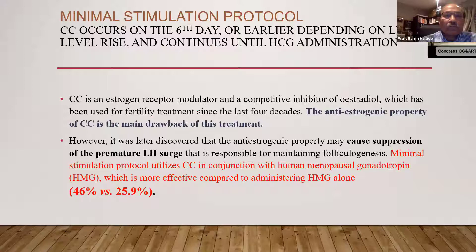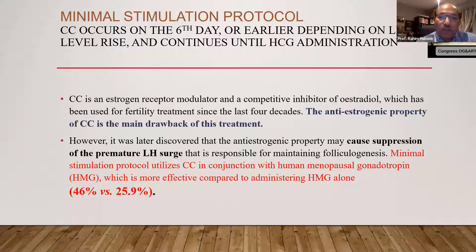How can we actually conduct the minimal stimulation protocol? We start with letrozole and continue the treatment with gonadotrophins after day five until the day of HCG or search. Clomiphene in conjunction with human menopausal gonadotrophin (HMG) is more effective compared to HMG alone — pregnancy rate is about 46% compared to 25.5%. So there is advantage in both cost and outcome.